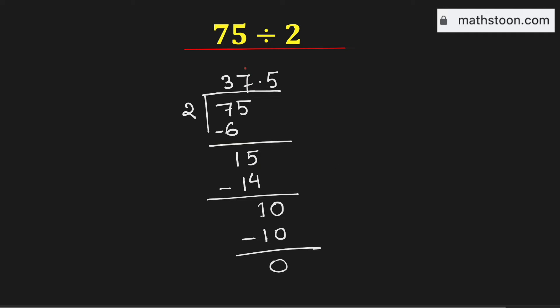So this number is the value of 75 divided by 2. So 75 divided by 2 is equal to 37.5 and this is our final answer. Thank you for watching.